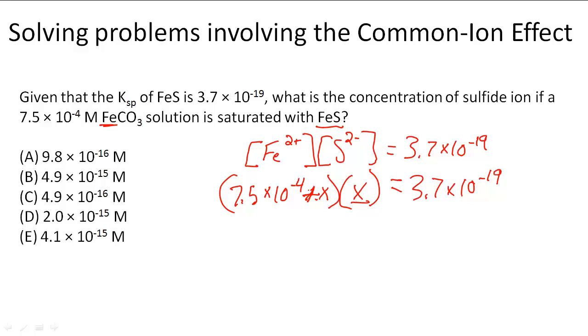As we will notice, the change in X, because this FeS is already not very soluble, and also because of the already present Fe ions, it makes the solubility even lower. So X for this must be very, very small. What we can do then is write 7.5 times 10 to the negative 4th times X. We can just make this negligible and get rid of it.